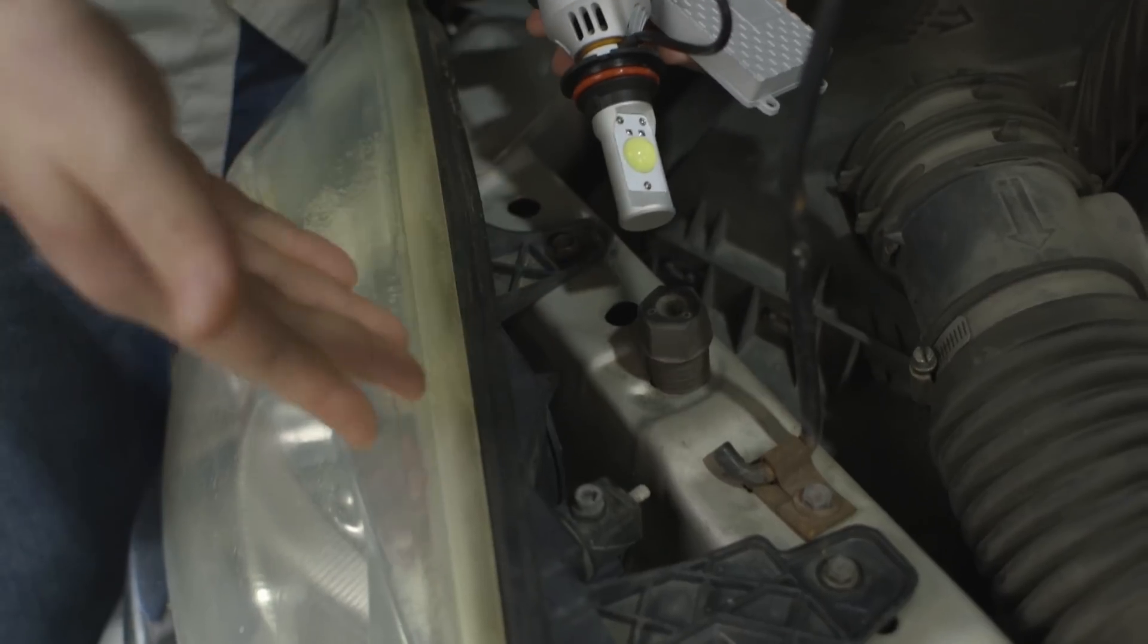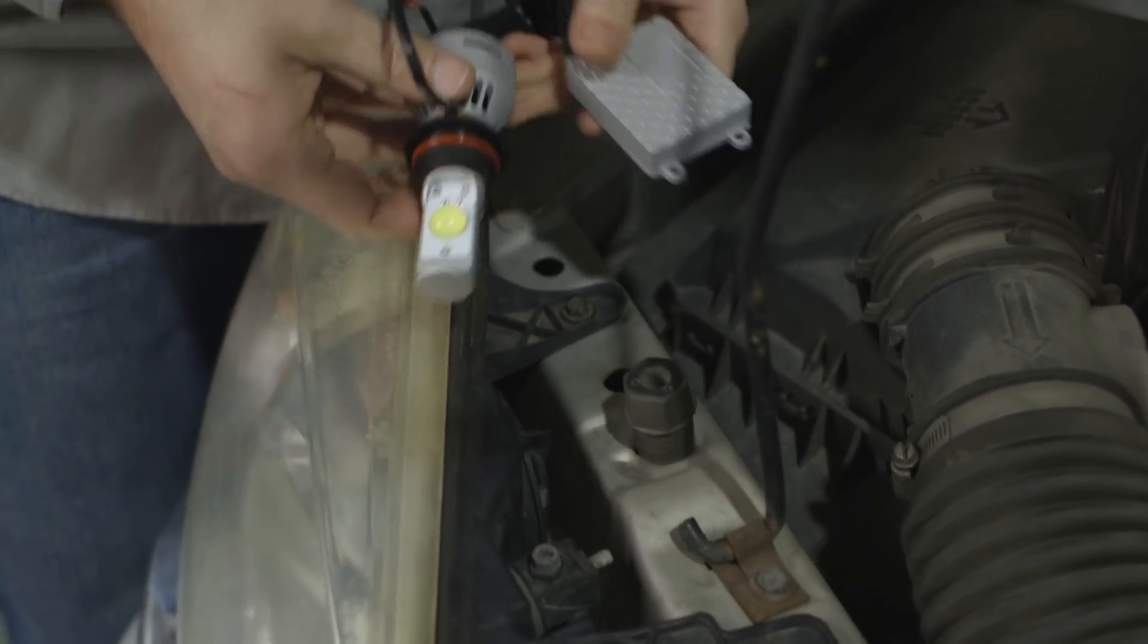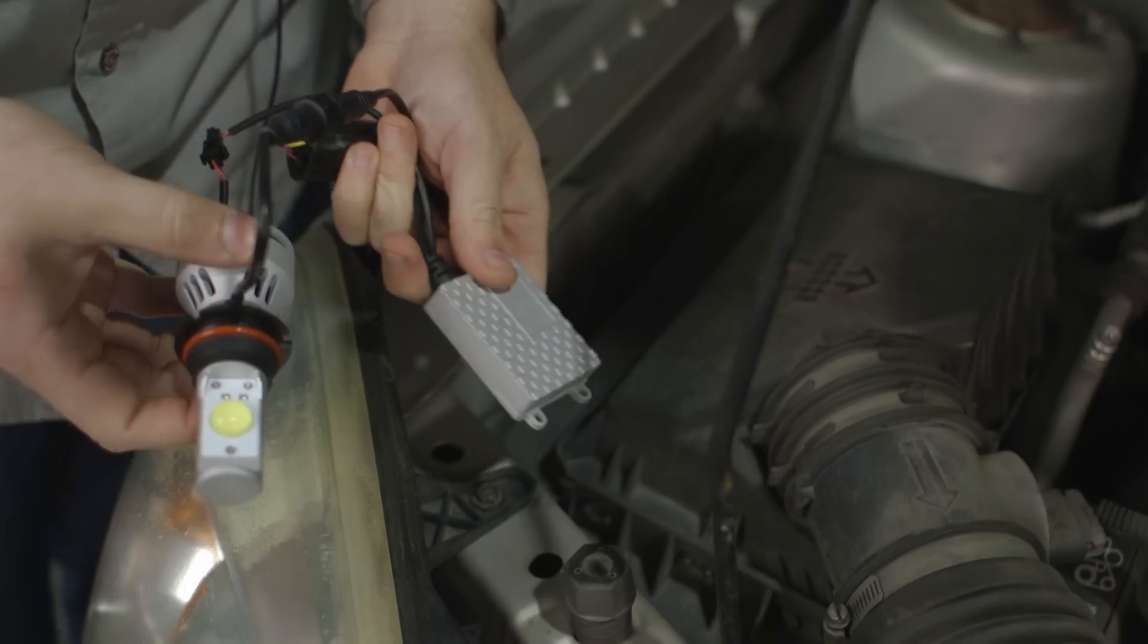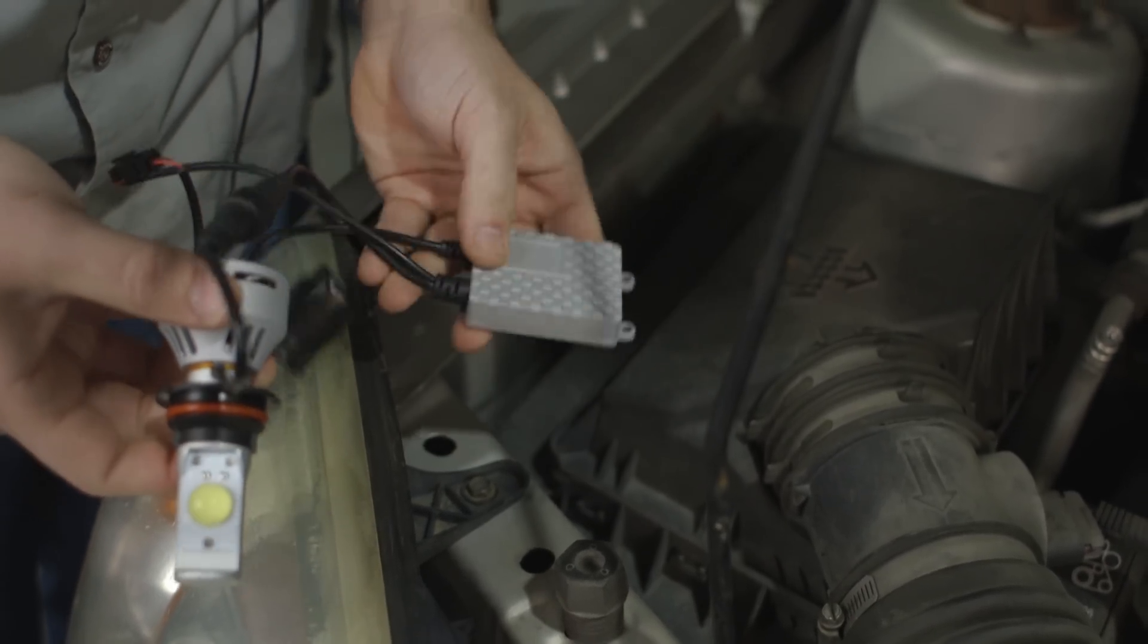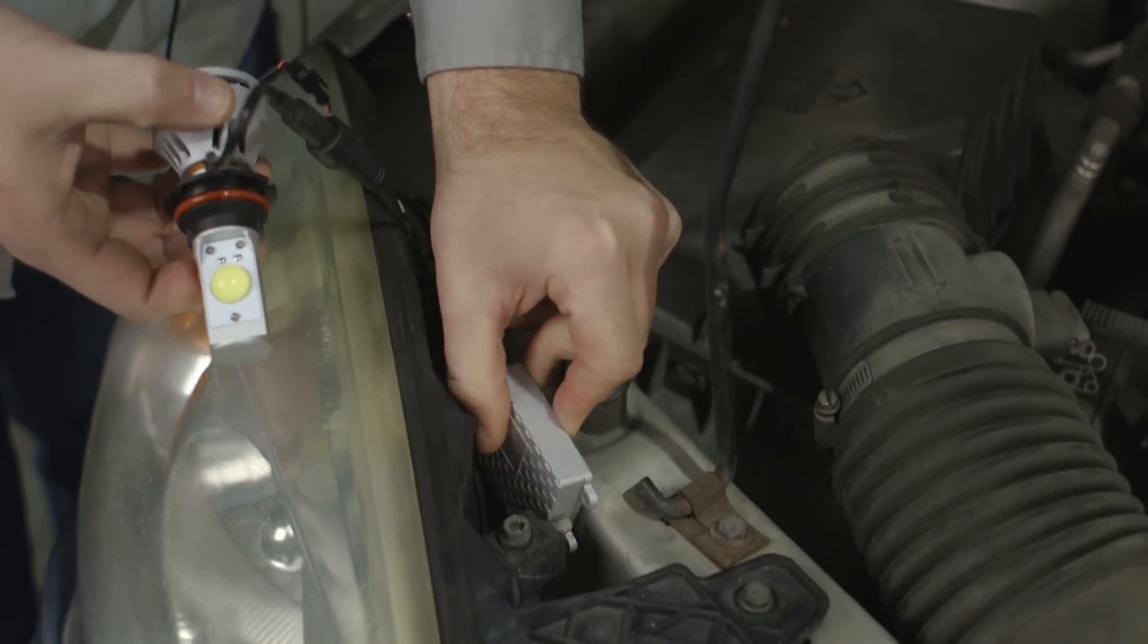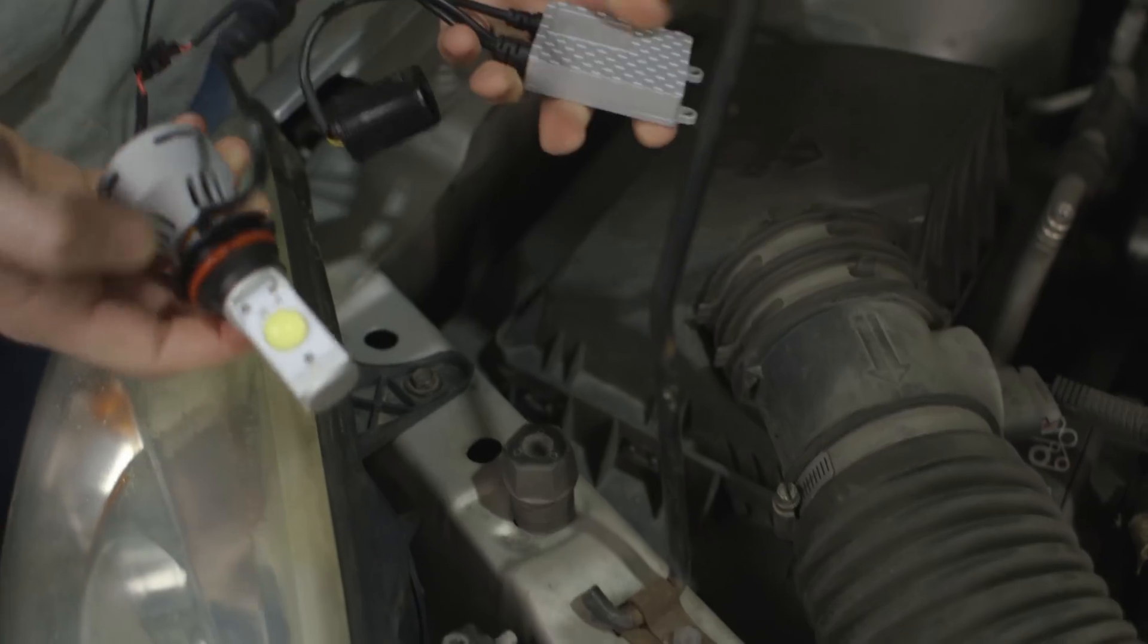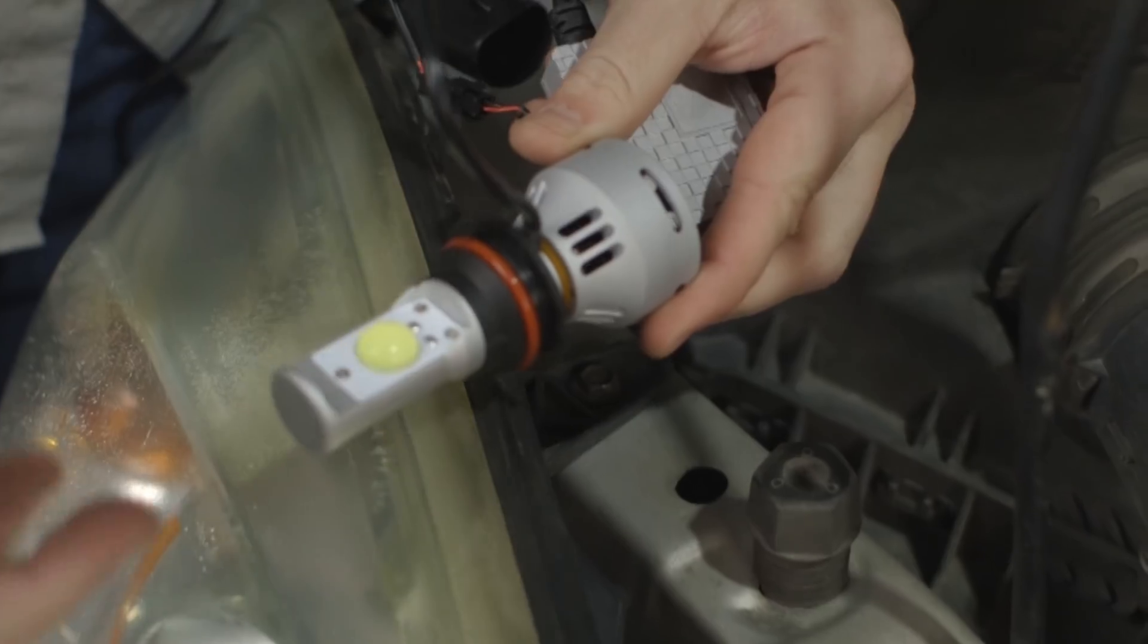You can see this first generation bulb would have a lot of problems being installed with this dust cap in the way. Probably would have to notch a hole out and then also this would get mounted somewhere in here where it's metal, you can't mount it on plastic, and it's just really cumbersome.